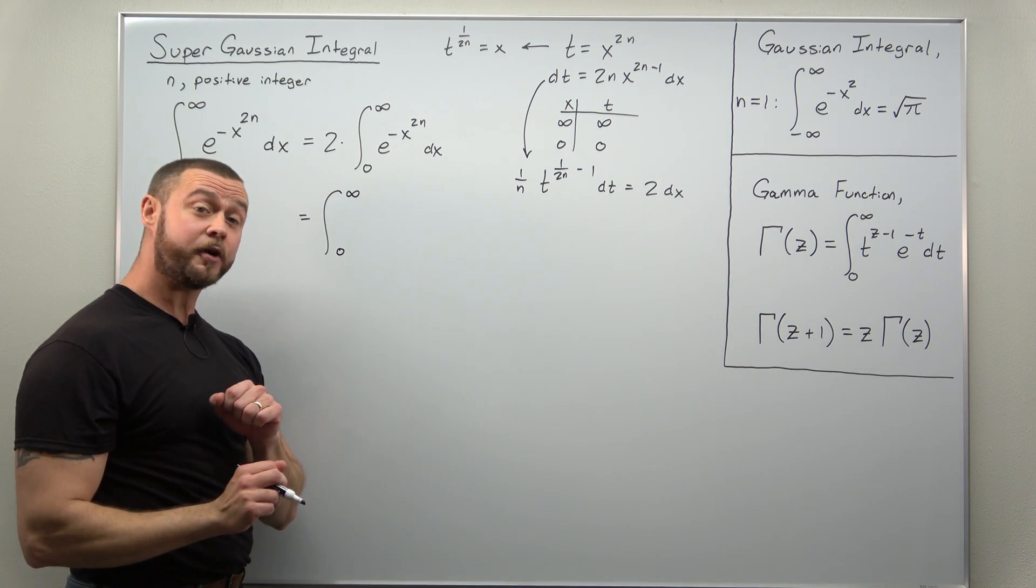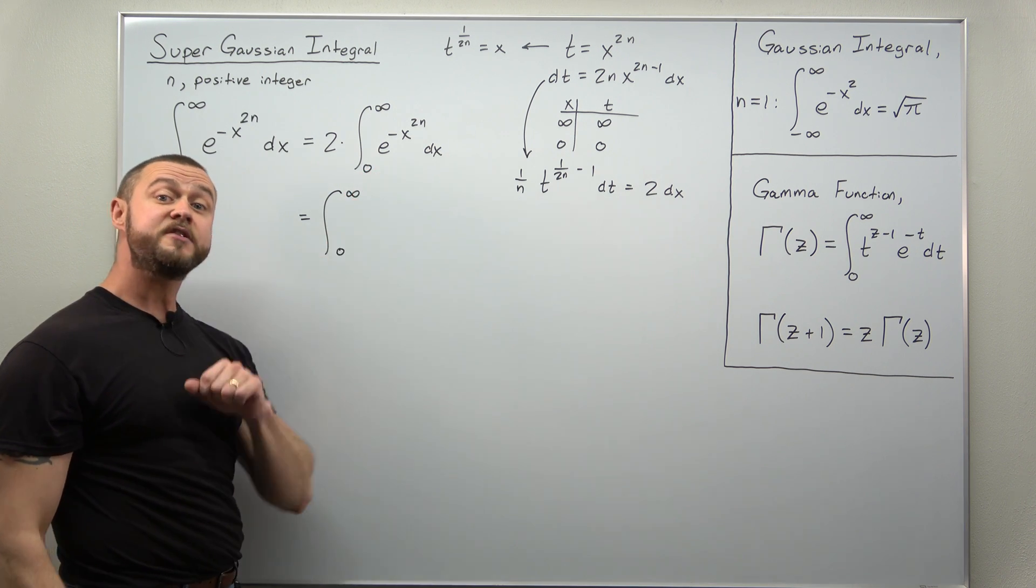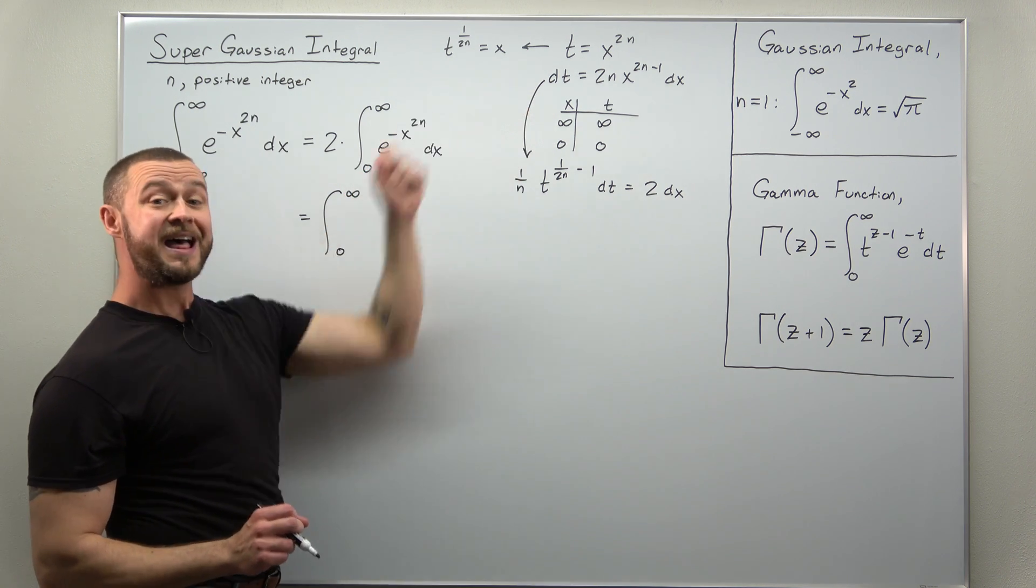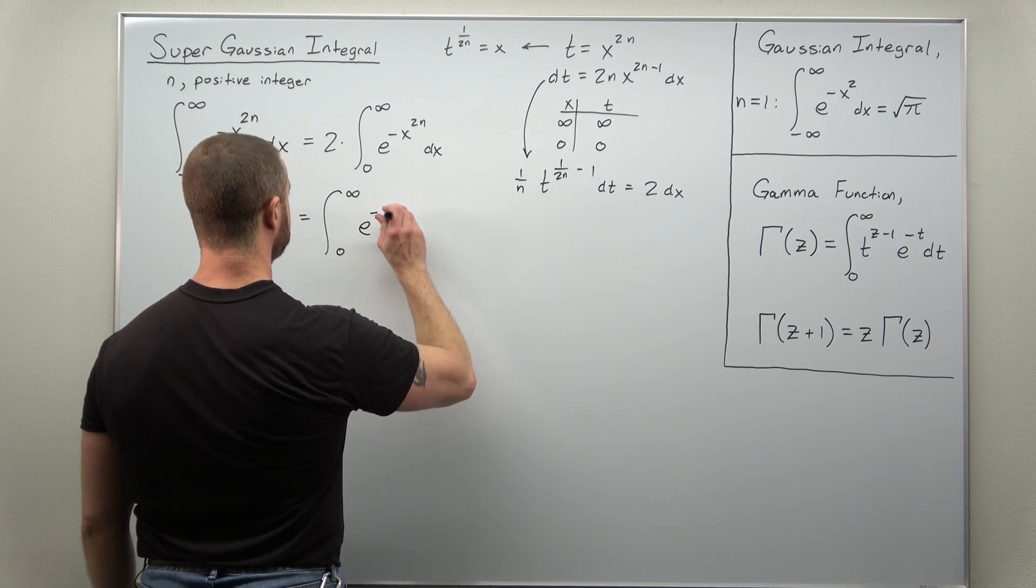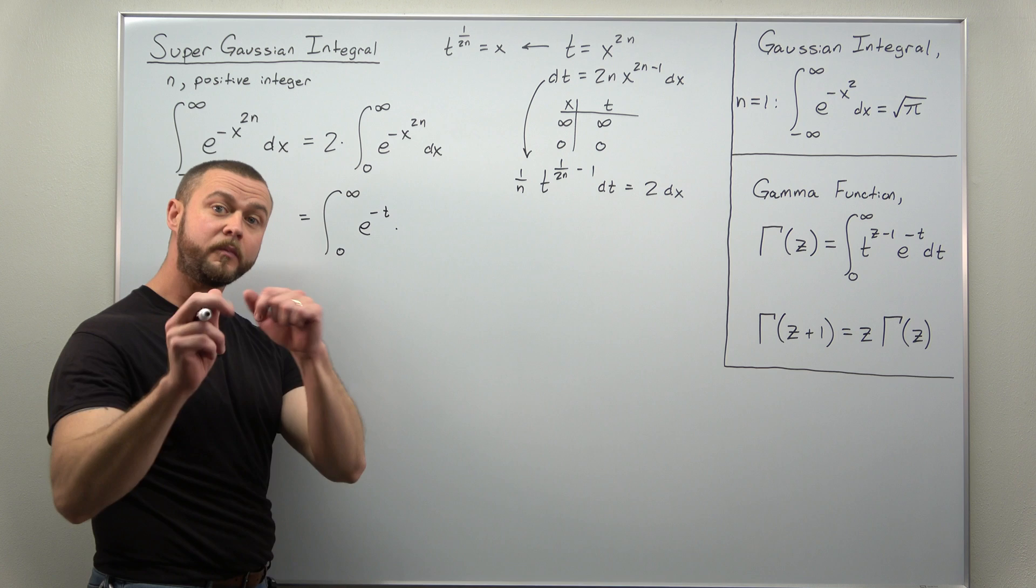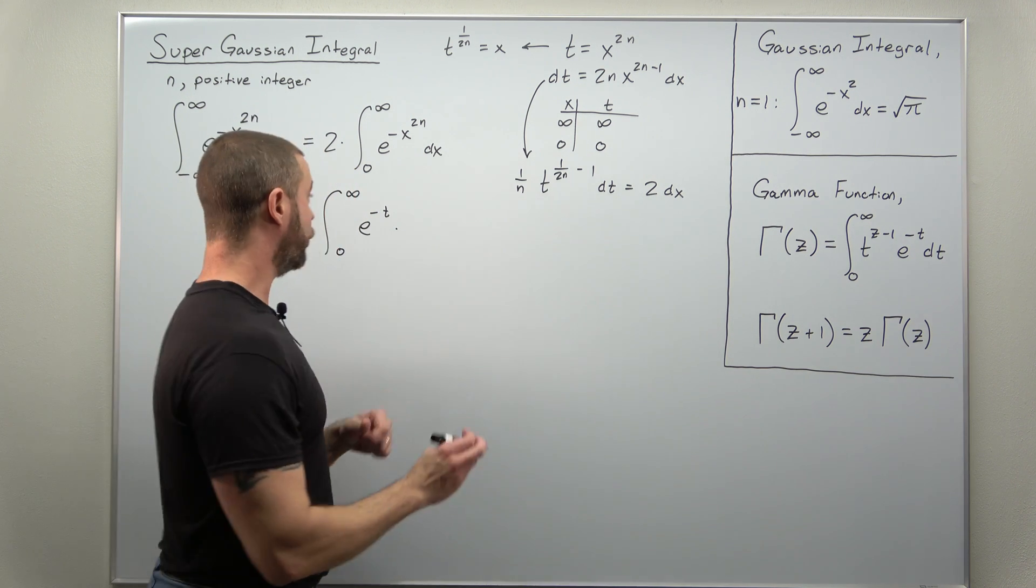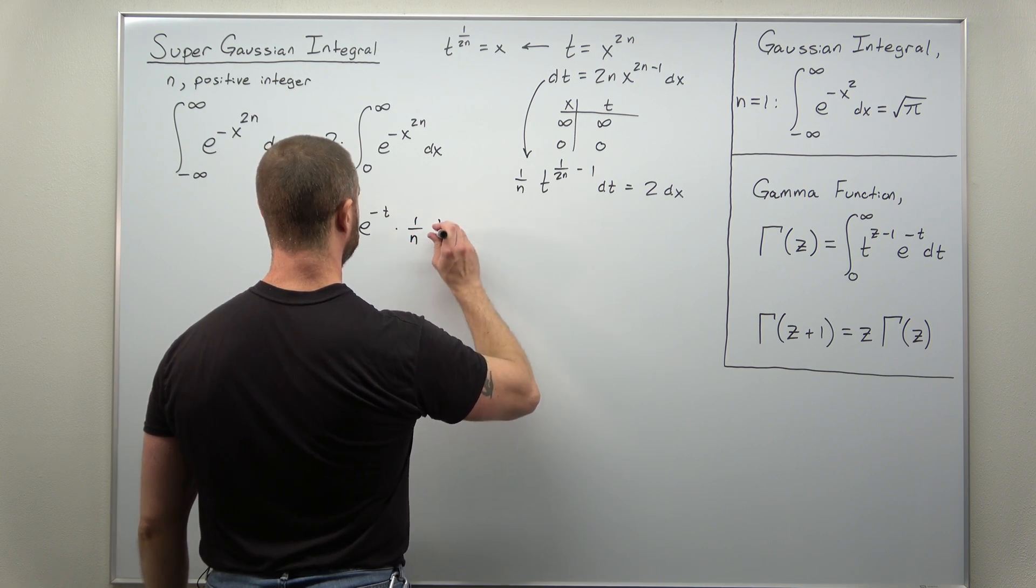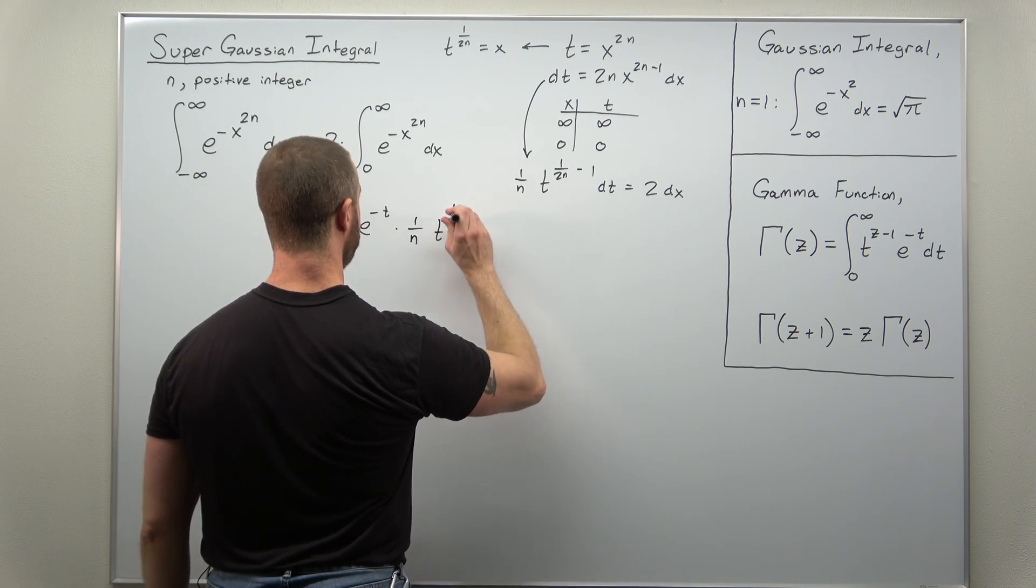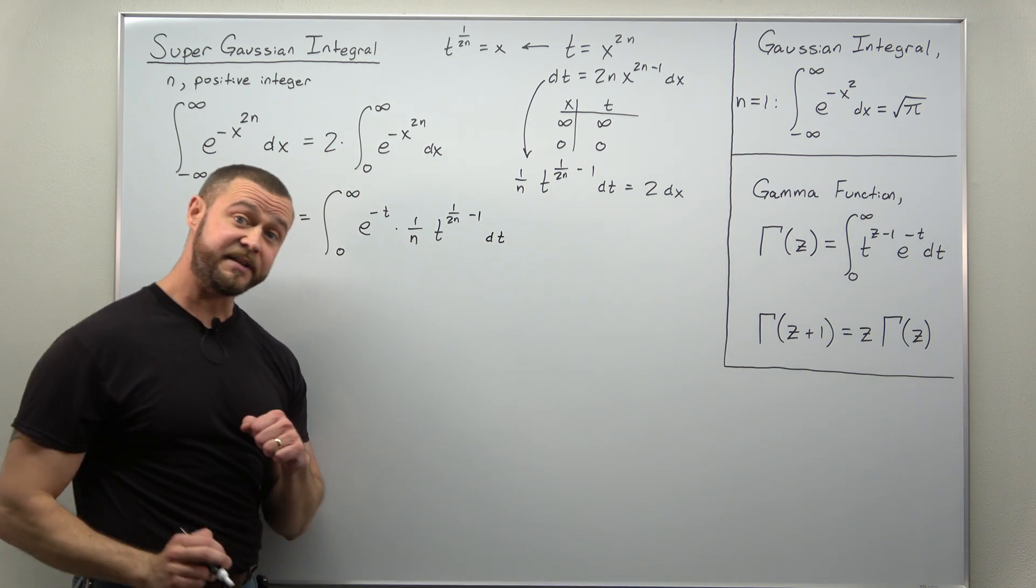And we're going to convert term by term. We have our exponential term, we can just rewrite that with our substitution as e to the negative t, and we're converting 2dx to this, 1 over n times t raised to the 1 over 2n minus 1 power times dt.